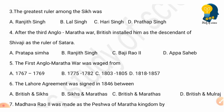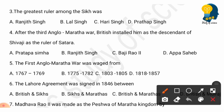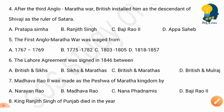Question 4: After the Third Anglo-Maratha War, the British installed him as a descendant of Shivaji as a ruler of Satara. Options: Pratap Simha, Ranjit Singh, Bhaji Rao, and Appa Sahib. The correct answer is option A: Pratap Simha. The British installed Pratap Simha as the descendant of Shivaji as a ruler of Satara.